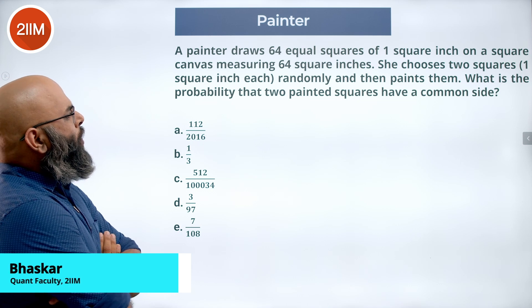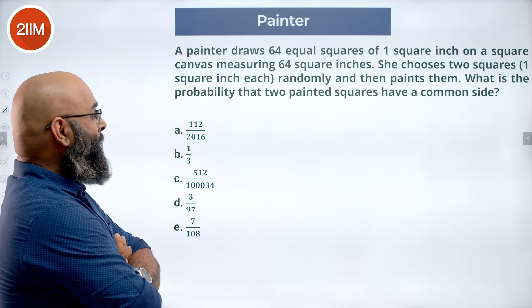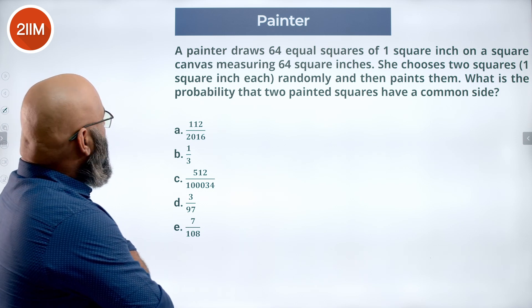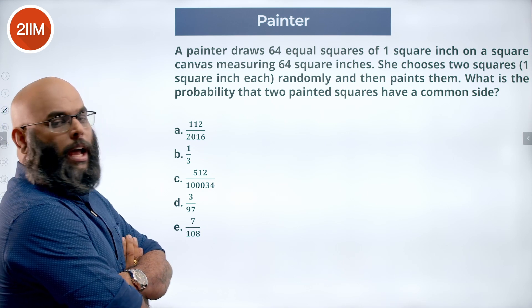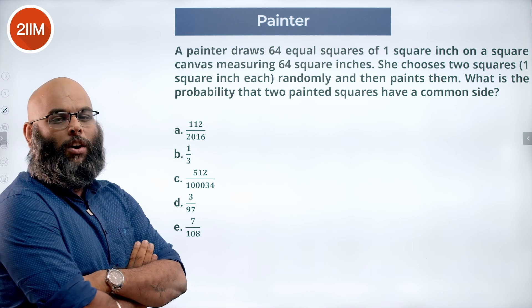A painter draws 64 equal squares of 1 square inch on a square canvas measuring 64 square inches. She chooses 2 squares, 1 square inch each, randomly and then paints them. What is the probability that the 2 painted squares have a common side?